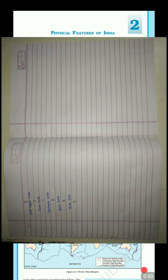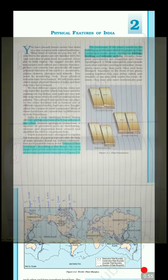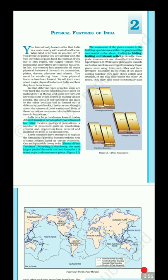India has all kinds of physical features — mountains, plains, peninsular plateau, desert, and coastal plain. The reason for the formation of all these features on the same landmass is that India has experienced many kinds of geological processes. Unlike, say, Saudi Arabia, which is largely desert.